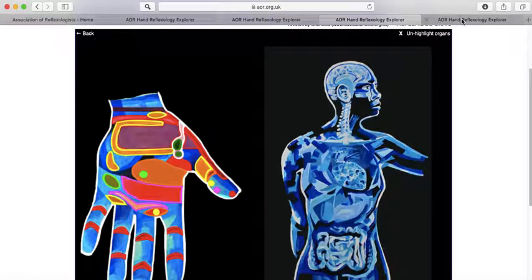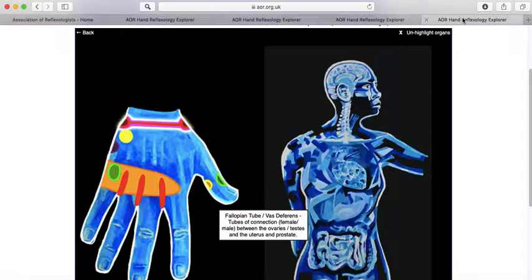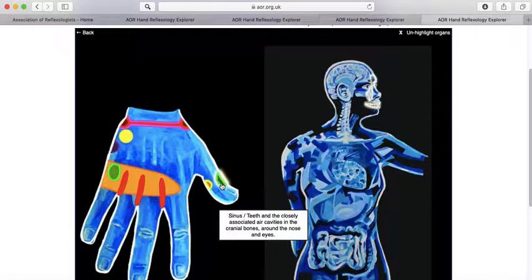The last point, the reflex that I wanted to show you is a teeth reflex, which is on the dorsal side of the hands, just below the thumb, the nail of the thumb. So that's the teeth.